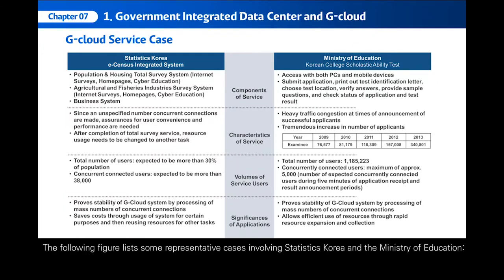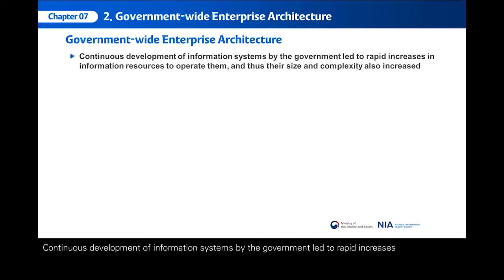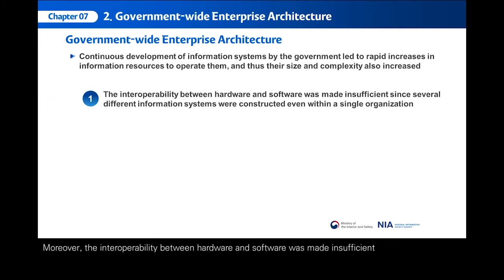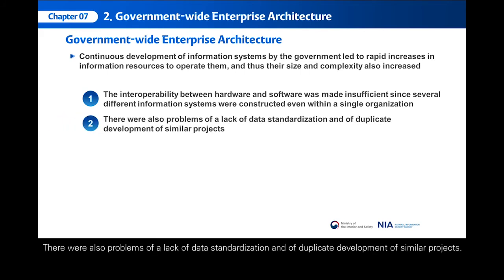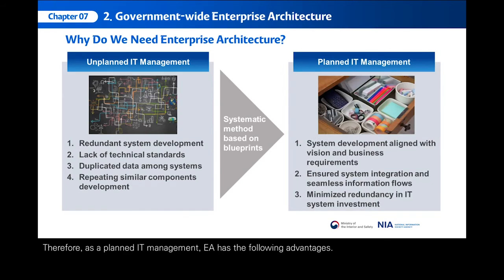The second topic to introduce regarding information resource management is the government-wide enterprise architecture. Continuous development of information systems by the government led to rapid increases in information resources, and their size and complexity also increased. Moreover, the interoperability between hardware and software was insufficient, since several different information systems were constructed even within one institution. There were also problems of a lack of data standardization and duplicate development of similar projects. The Korean government therefore adopted EA, Enterprise Architecture, as a tool for this job — as a planned IT management approach — and EA has the following advantages.